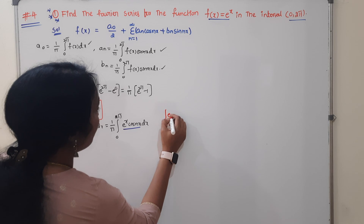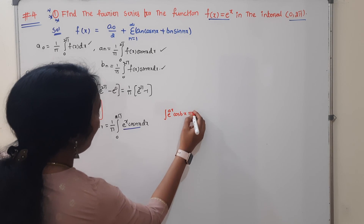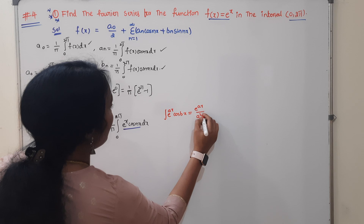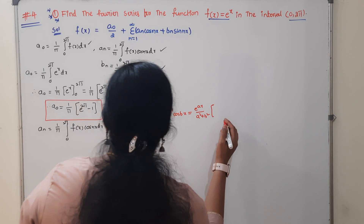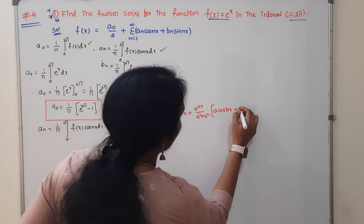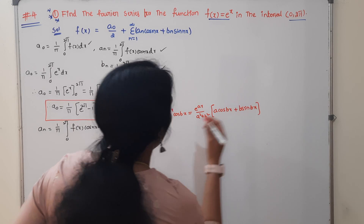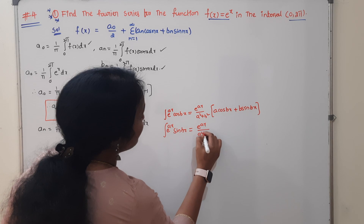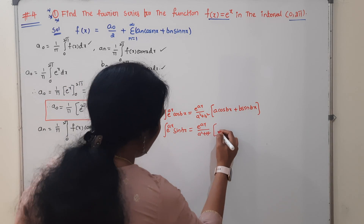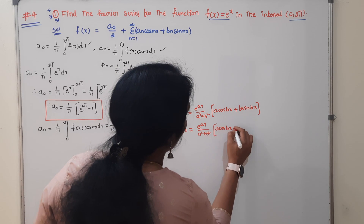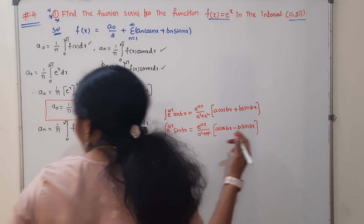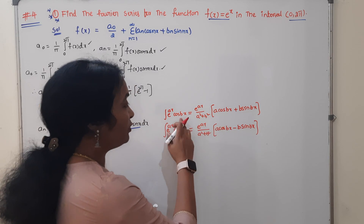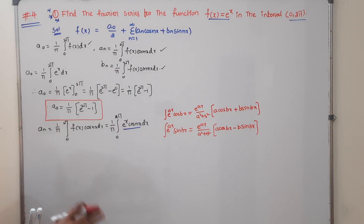The integral formula is: ∫ e^(ax)·cos(bx) dx = e^(ax)/(a²+b²)·(a·cos(bx) + b·sin(bx)). And similarly for the sine version: ∫ e^(ax)·sin(bx) dx = e^(ax)/(a²+b²)·(a·sin(bx) − b·cos(bx)). Remember this — it is very important.